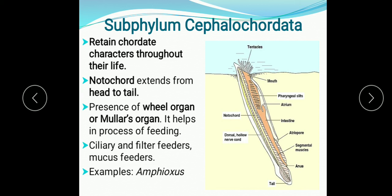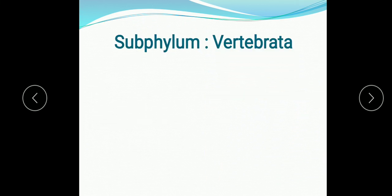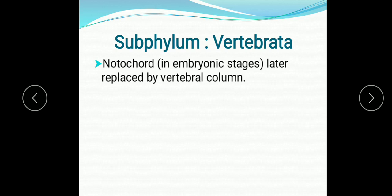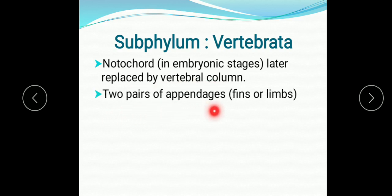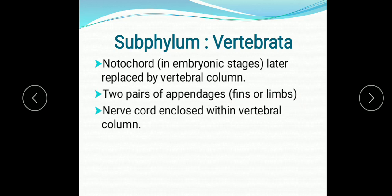Now we will study sub-phylum Vertebrata. In Vertebrata the notochord is present only in the embryonic stage; later it is replaced by the vertebral column. Two pairs of appendages — fins or limbs — are present. The nerve cord is enclosed within the vertebral column because the notochord develops into the vertebral column, which has a neural cavity in which the nerve cord runs.